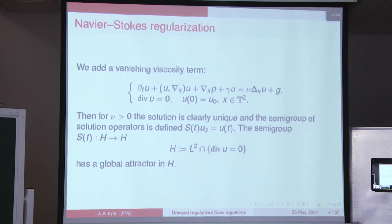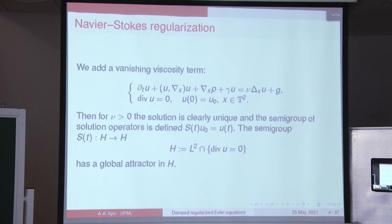This system is studied under the assumption that gamma is fixed and nu is small. Then there's no problem with uniqueness. We live on the torus or on the manifold without boundary, where we have the orthogonality condition. And it is easy to construct, following the well-established theory, the global attractor of this system in the space H of divergence-free L2 functions.